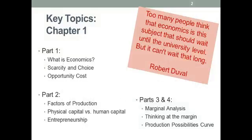Key topics for chapter one: this basic economic concepts unit is going to cover three different chapters. Part one of chapter one is going to be, what is economics? We're going to talk about the key ideas of scarcity and choice and opportunity cost. Part two, we're going to talk about the factors of production, physical versus human capital, and entrepreneurship. And then in parts three and four, we're going to deal with marginal analysis, this idea of thinking at the margin. And we're going to introduce our first real economics model, the production possibilities curve.